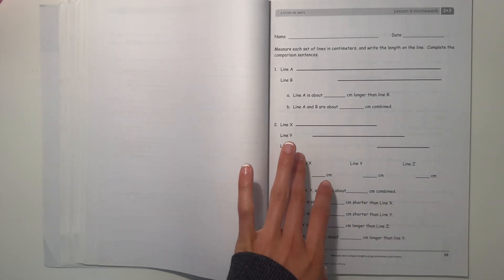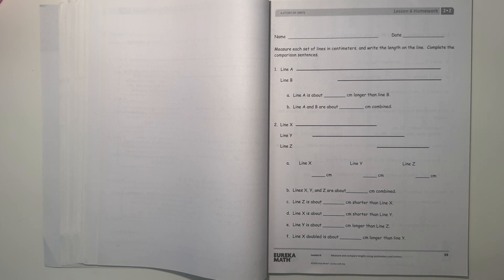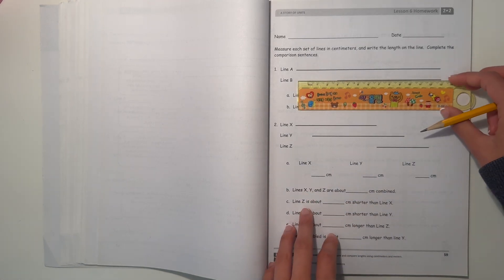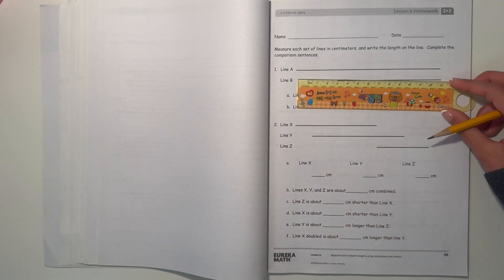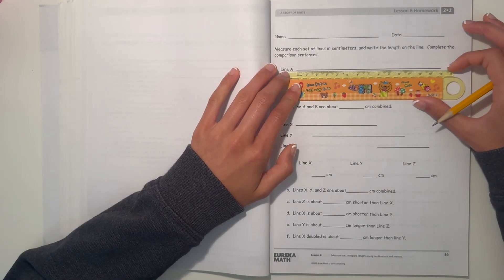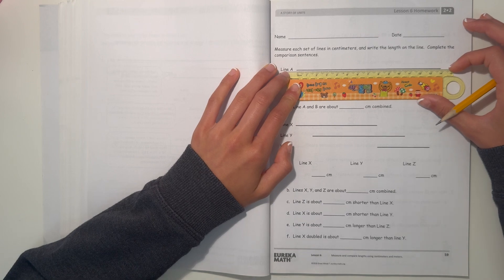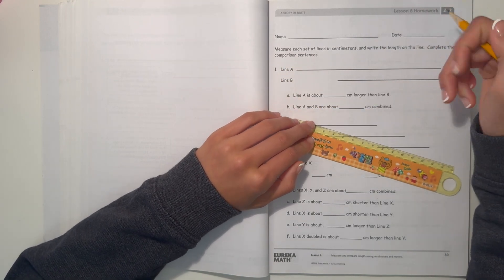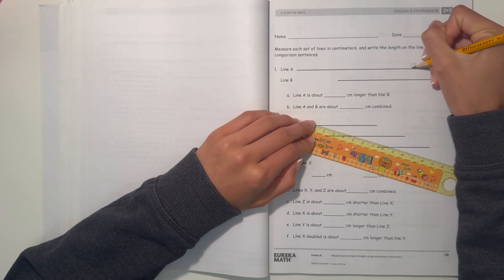Measure each set of lines in centimeters and write the length on the line. Complete the comparison sentences. Okay, so I have my ruler here. So let's see, measure each set of lines. So line A, start at 0, that's about 14 centimeters. So let's just write it here, 14 centimeters.